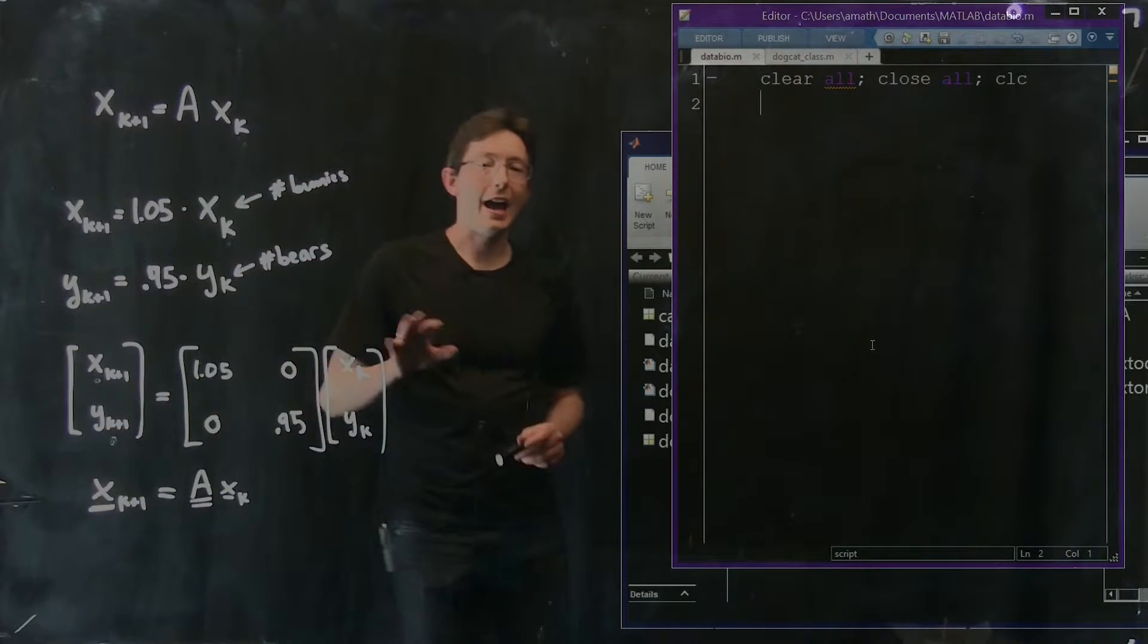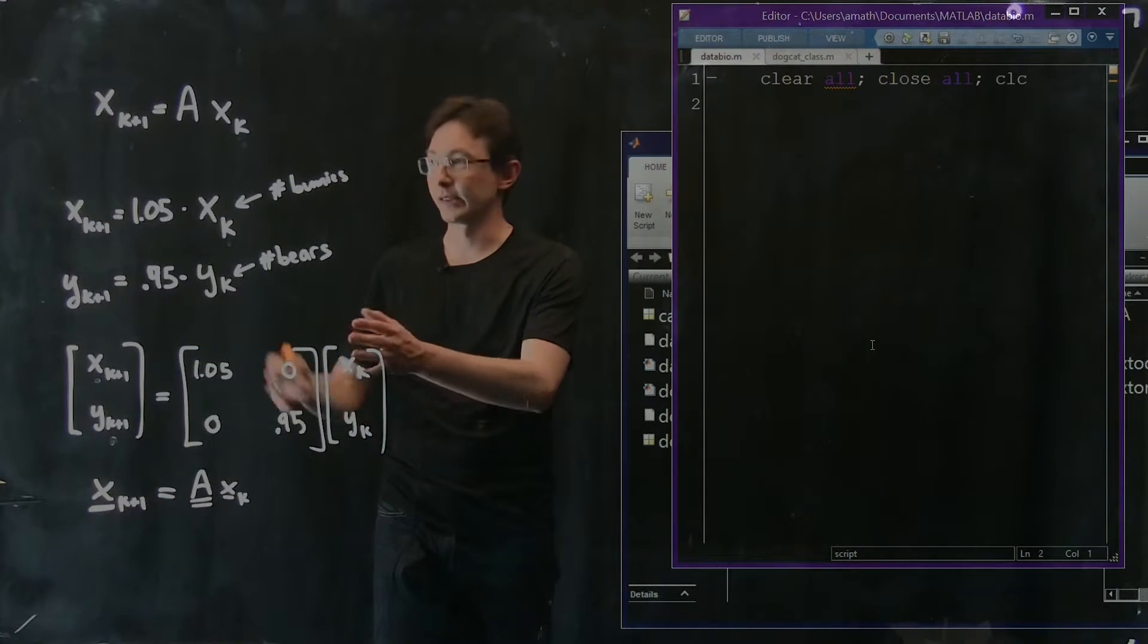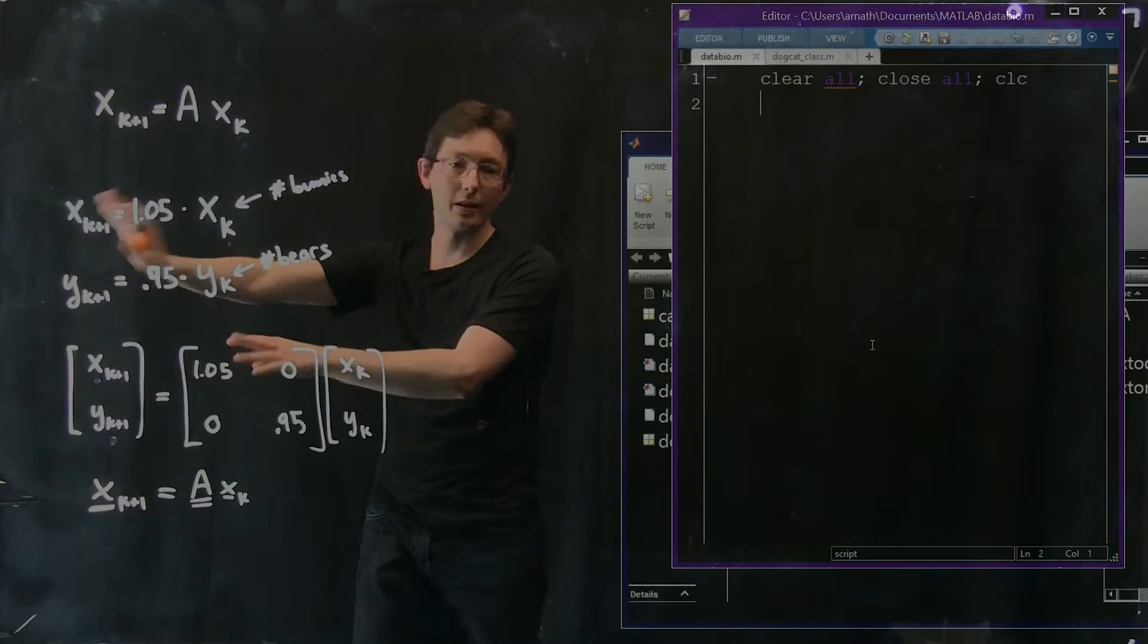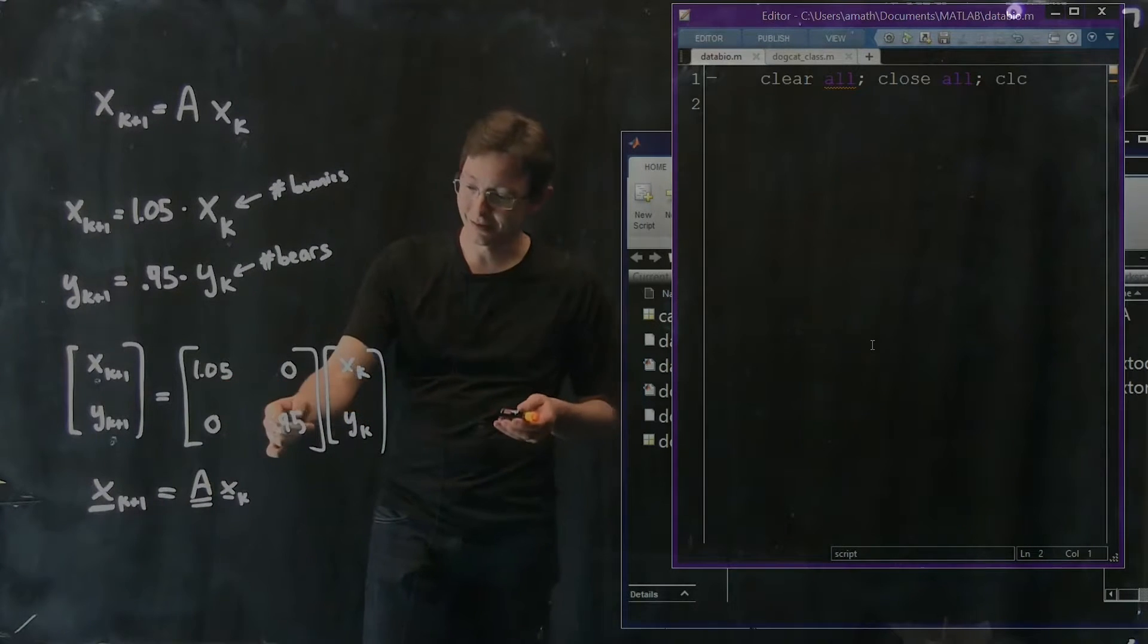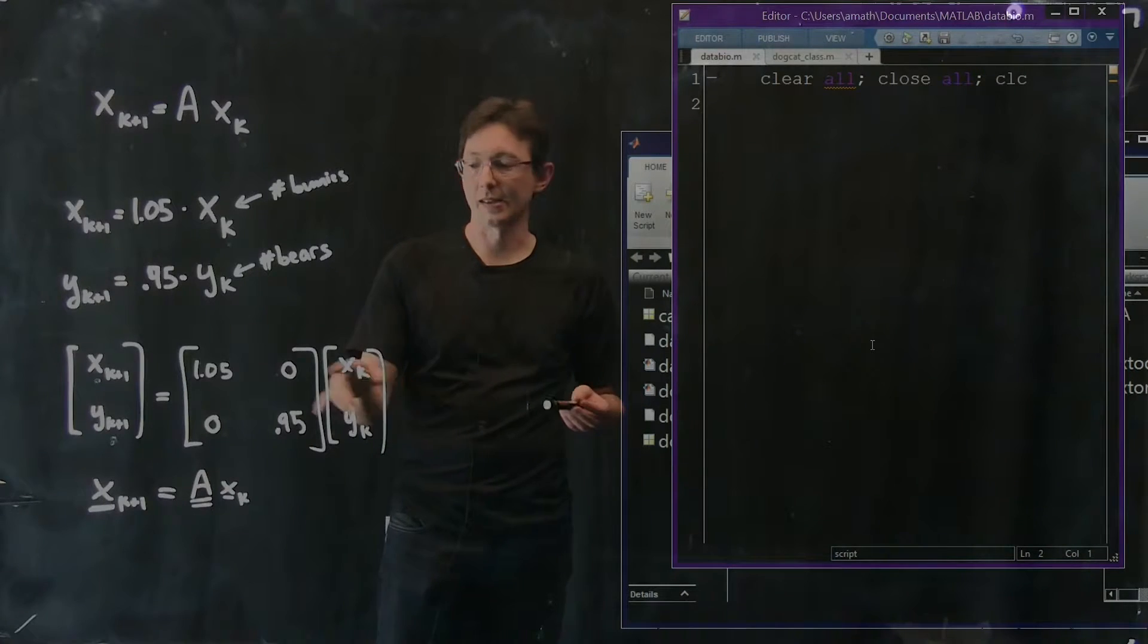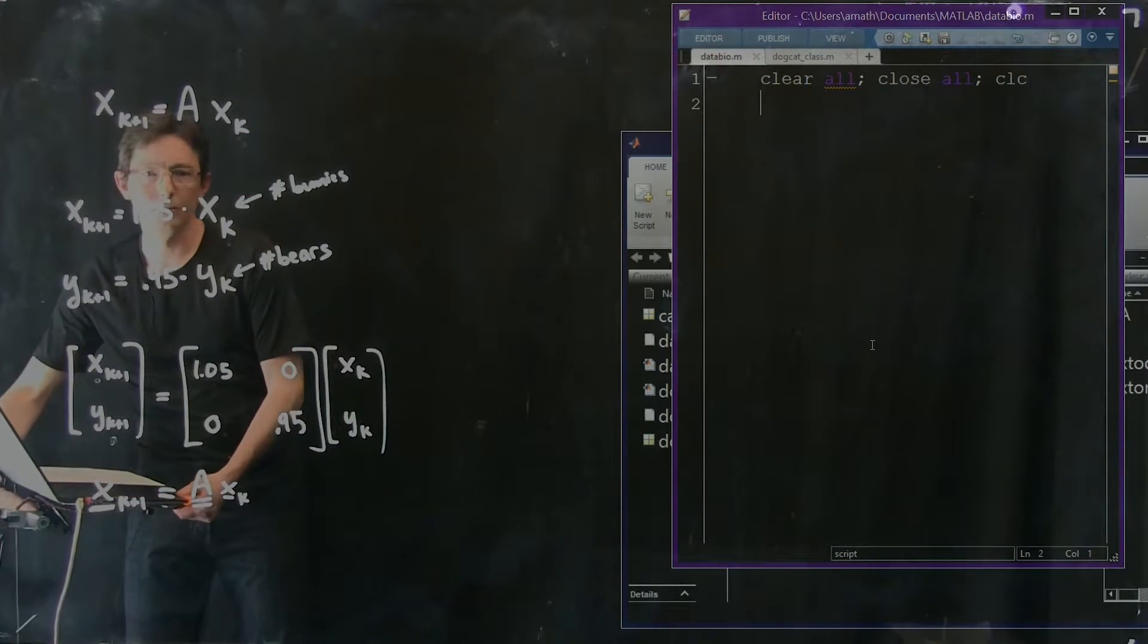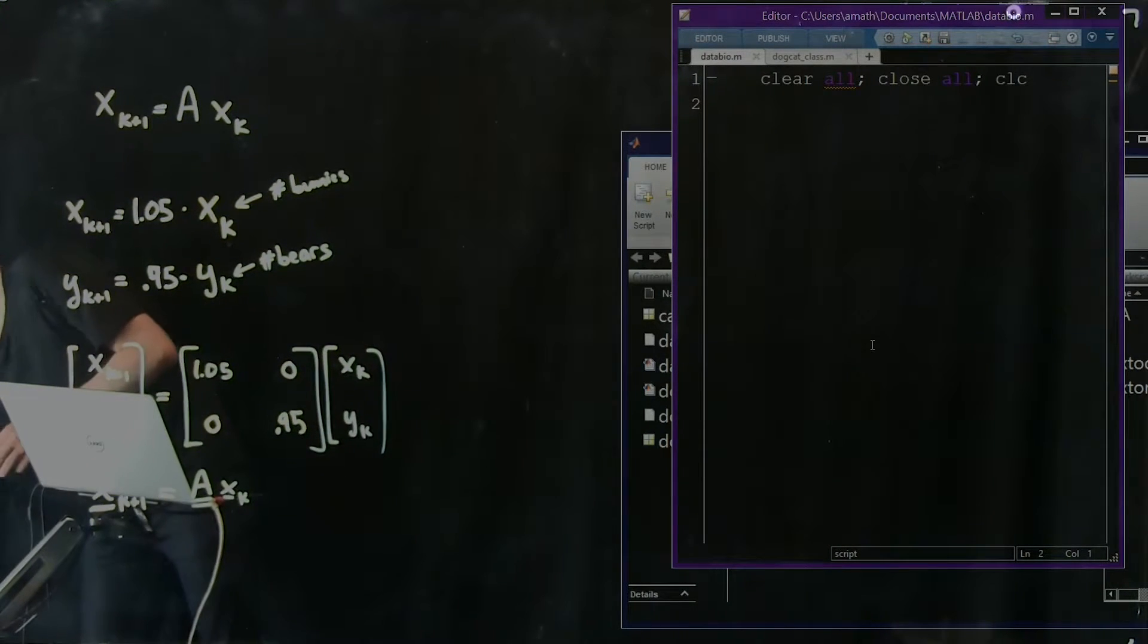Now, I didn't have to couple the system. I didn't have to write this as a vector system times a matrix A because my system was simple enough that I could have just said bunnies do their thing, that's one equation. Bears do their thing, that's another equation. But eventually, I'm going to want to couple these. I'm going to say, well, if there's more bunnies, maybe the bears have enough food to live more. Things like that. So I might want to keep this as a system so I can play with it later. So now it's time to code this up.